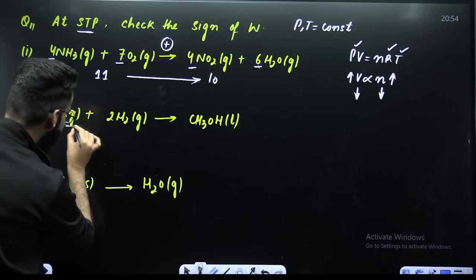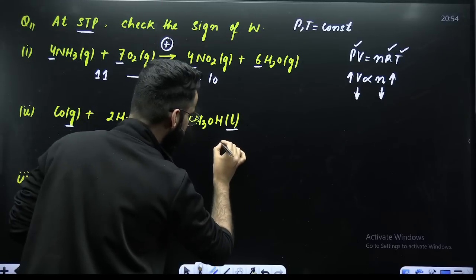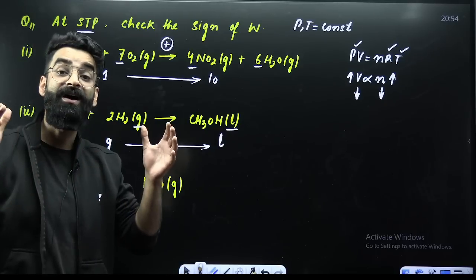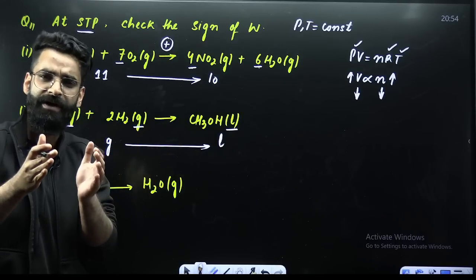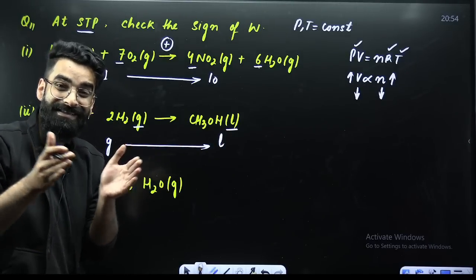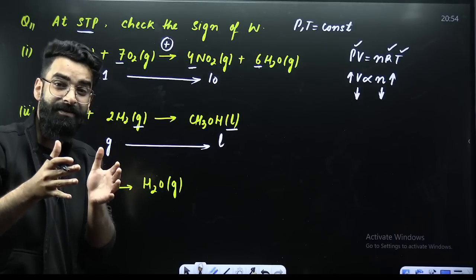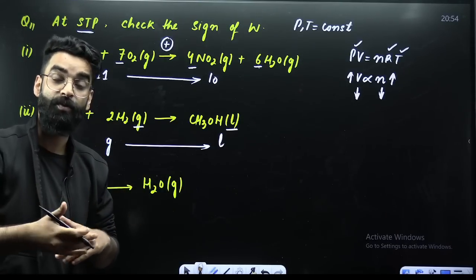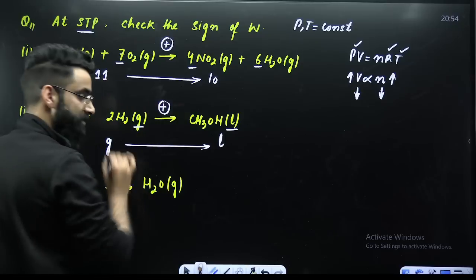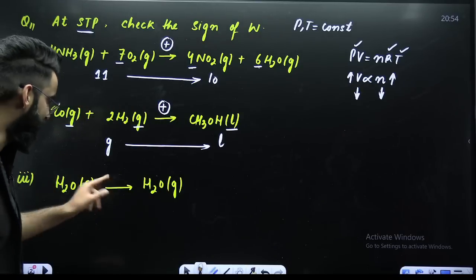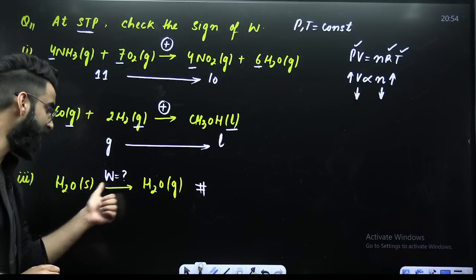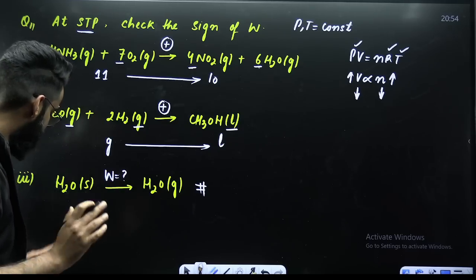Number two: on the reactant side you have gases, on the product side you have liquid. Gases are getting converted into liquid. Gas molecules are far apart; liquid molecules are completely close. So when gases are converted to liquid, molecules are coming closer — distance is decreasing — and we call that compression. Whenever there is compression, work is done on the system, so the value of W is again positive. This is your homework question: let me know in the chats what will be the sign of W for solid into gas. This was concept number one.